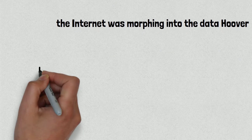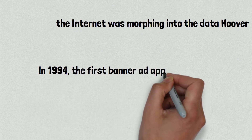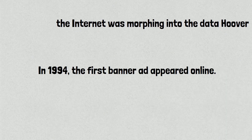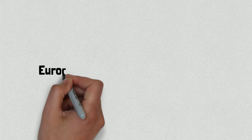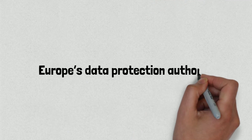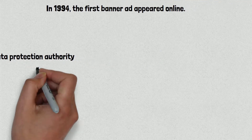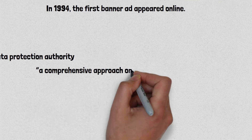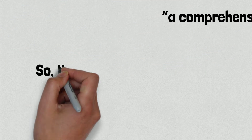In 1994, the first banner ad appeared online. In 2000, a majority of financial institutions offered online banking. In 2006, Facebook opened to the public. In 2011, a Google user sued the company for scanning her emails. Two months after that, Europe's Data Protection Authority declared the EU needed a comprehensive approach on personal data protection, and work began to update the 1995 directive.